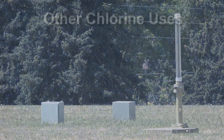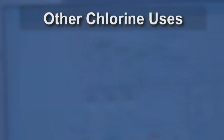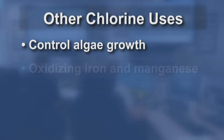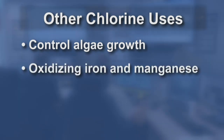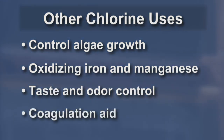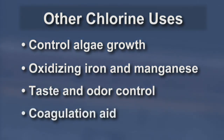In addition to disinfection, chlorine is also useful in controlling algae growth within the treatment plant, oxidizing iron and manganese, and taste and odor control. It can also improve the coagulation process for particle removal.